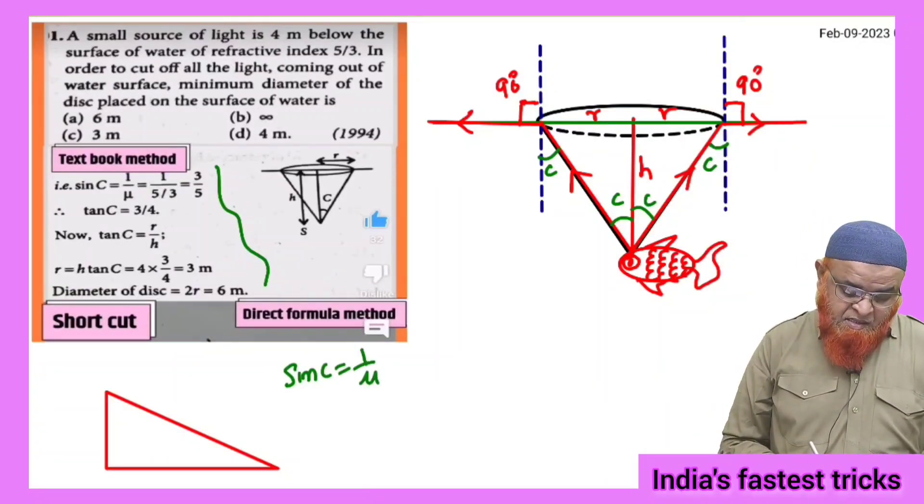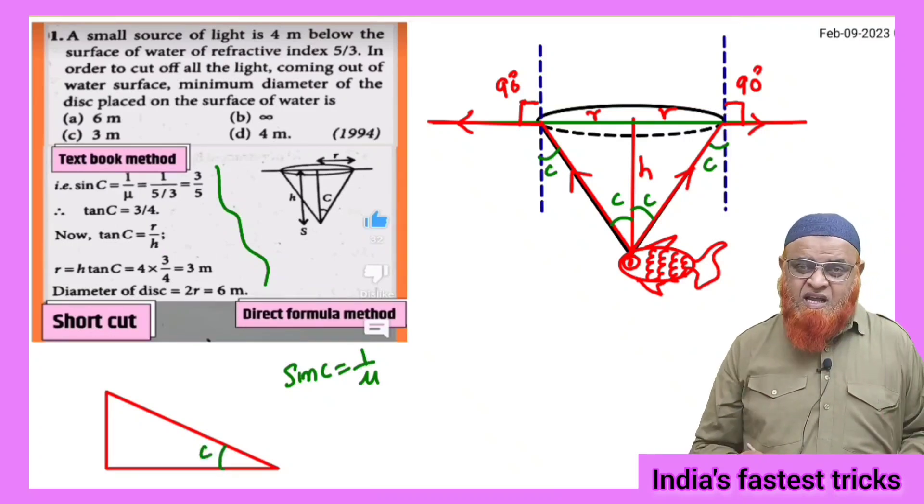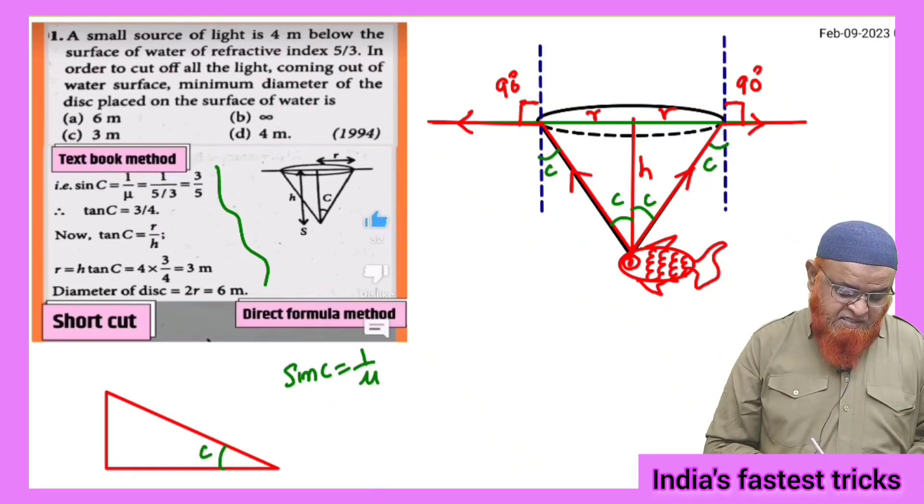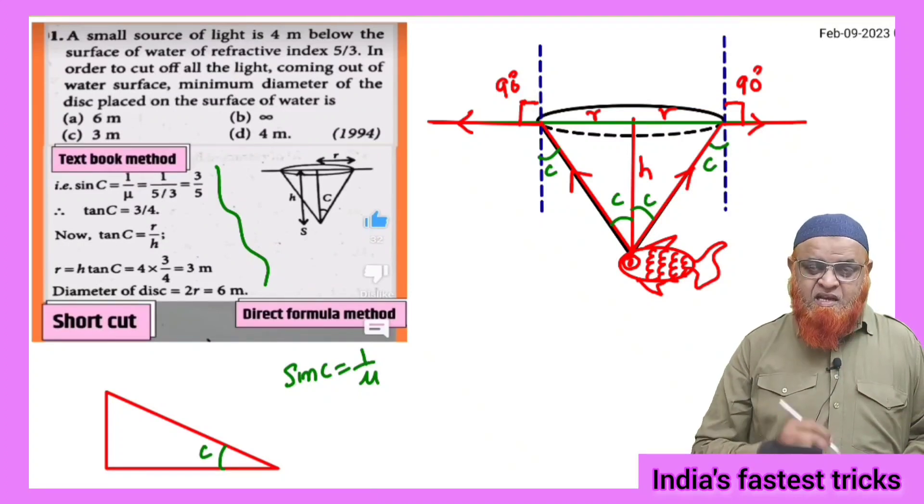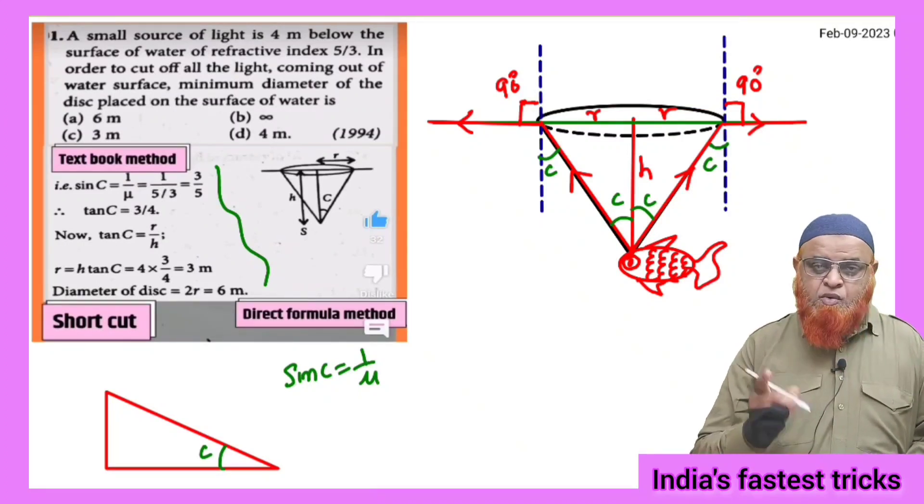You all know that sin c is equal to 1 by mu. This is the formula for critical angle. And let us imagine this is sin c. This is angle c here. 1 by mu.